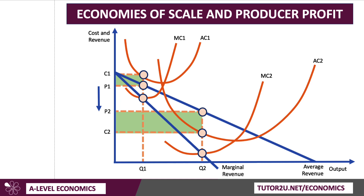Economies of scale can allow firms to move from loss to profit by dint of the efficiency gains and the other benefits that come with different economies of scale. The long-run average cost curve — the envelope curve — tries to envelop the path of unit cost as output goes up. Moving from AC1 to AC2 involves moving down the long-run average cost curve, hence internal economies of scale. The firm is now able to make an economic or supernormal profit, shown by the green shaded area.